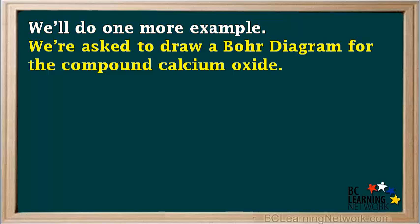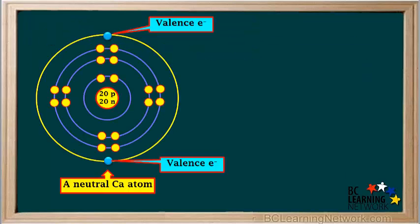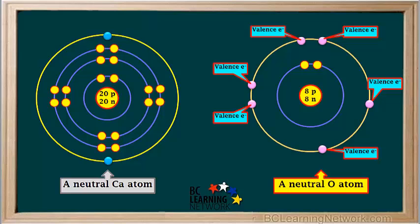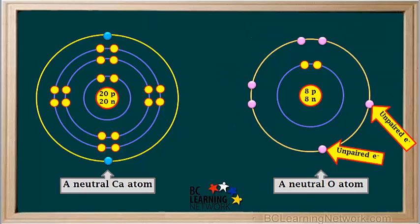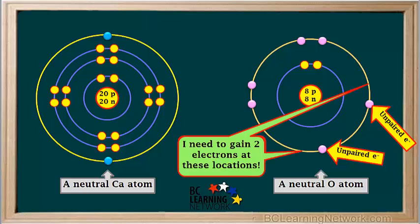We'll do one more example. We're asked to draw a Bohr diagram for the compound calcium oxide. We'll start with a neutral atom of calcium, showing its valence shell as yellow and its two valence electrons as two small light blue circles. Now we'll add a neutral oxygen atom, showing its valence shell as a light orange circle and its six valence electrons in pink. Notice that two of oxygen's valence electrons are unpaired; in order for oxygen to get a stable octet, it would need to gain two electrons to pair up with the two unpaired electrons.